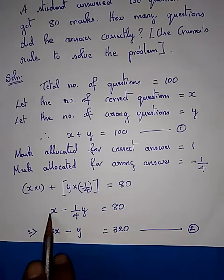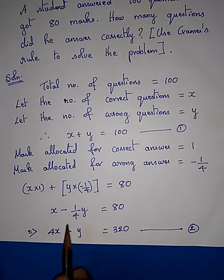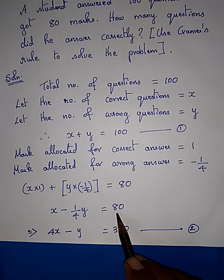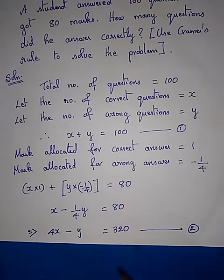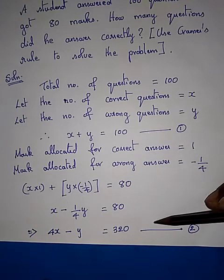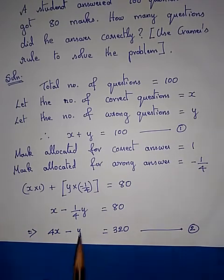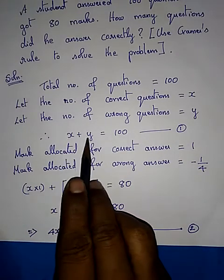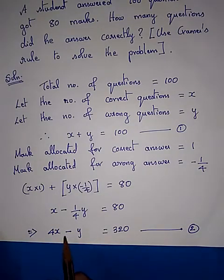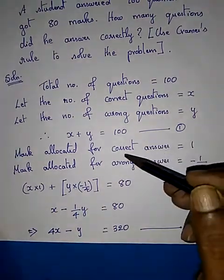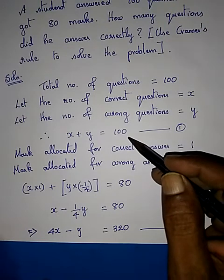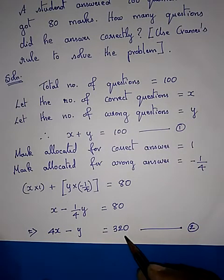Now multiply this equation by 4. This gives 4X; the 4 cancels on the fraction, leaving minus 1·Y; and 80 into 4 gives 320. So the second equation becomes 4X − Y = 320. We now have two equations which can be written in matrix form as: [1, 1; 4, −1] · [X; Y] = [100; 320].